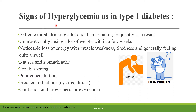Signs of hyperglycemia as in type 1 diabetes include: extreme thirst, drinking a lot and urinating frequently, unintentional loss of weight within a few weeks, noticeable loss of energy with muscle weakness, tiredness, generally feeling quite unwell, nausea, stomach ache, trouble seeing, poor concentration, frequent infections, and confusion, drowsiness, or even coma.